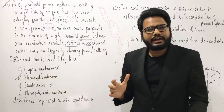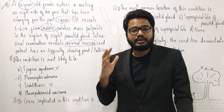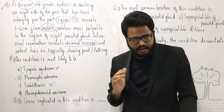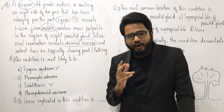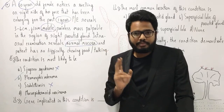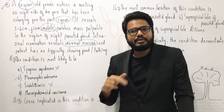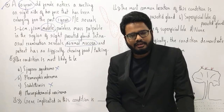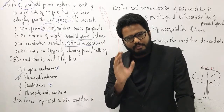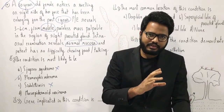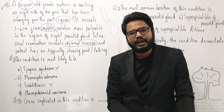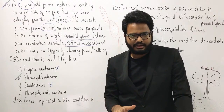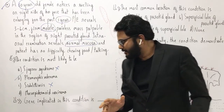Pleomorphic adenoma is one of the most common — in fact, the most common salivary gland tumor. And of all the tumors of the parotid gland, pleomorphic adenoma is the most common one found in the parotid. So the most common salivary gland tumor is pleomorphic adenoma, and the most common parotid tumor is also pleomorphic adenoma.